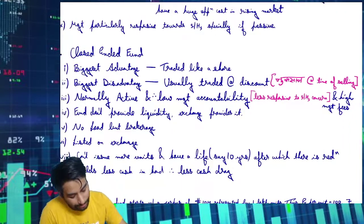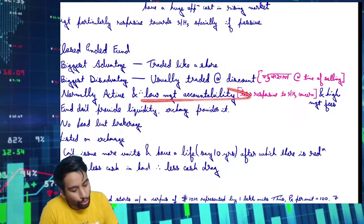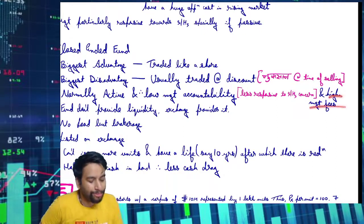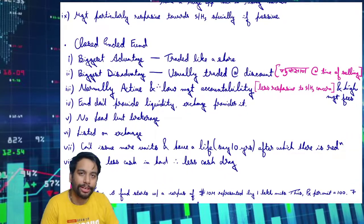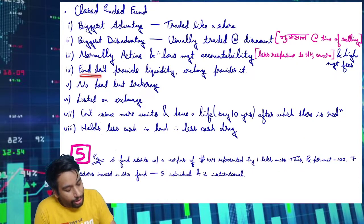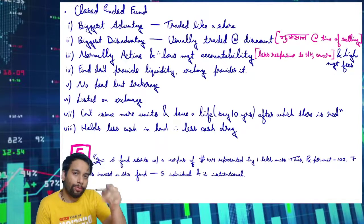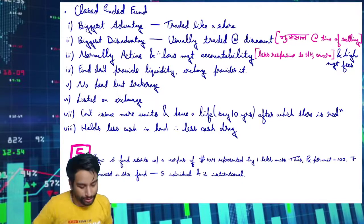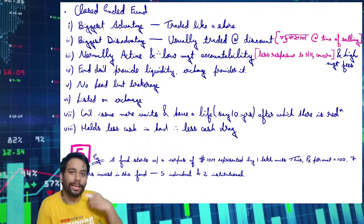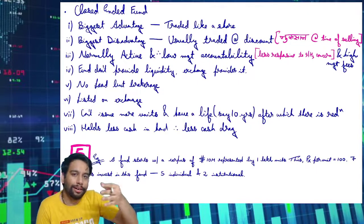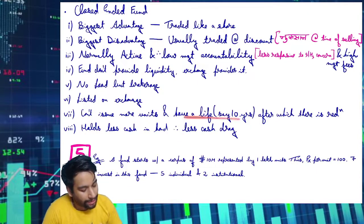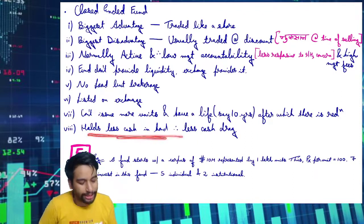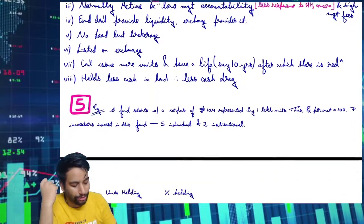It trades exactly like a share, which is a great thing. But the disadvantage is it usually trades at a discount — most of the time it runs at a discount, and we'll see the reasons for that later. It is normally an active fund, and therefore has low management accountability — management is less responsive to shareholders. There are high management fees because it is actively managed, promising super-normal returns. The fund does not provide liquidity — go to the exchange to find buyers and sellers. There is no entry or exit load, but you pay brokerage just like buying shares. It is listed on exchanges, has limited units just like an IPO, and has a life of about 10 years after which there is redemption. It holds less cash since people are trading among themselves on the exchange.